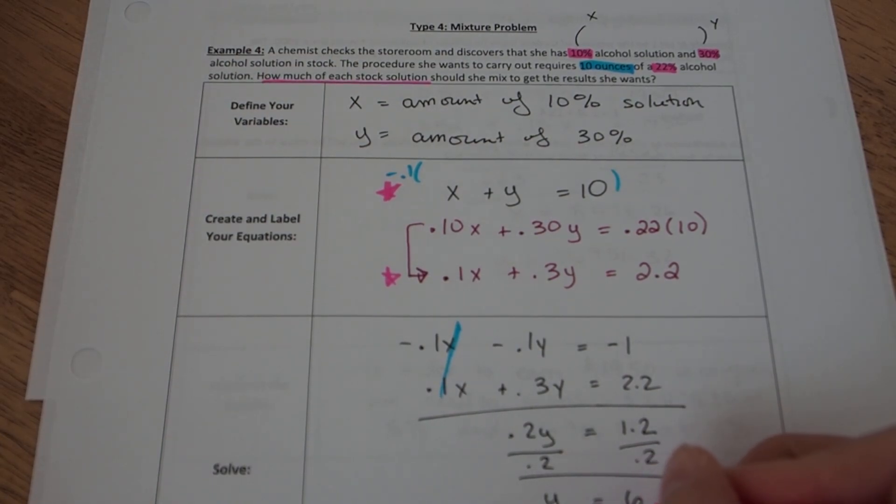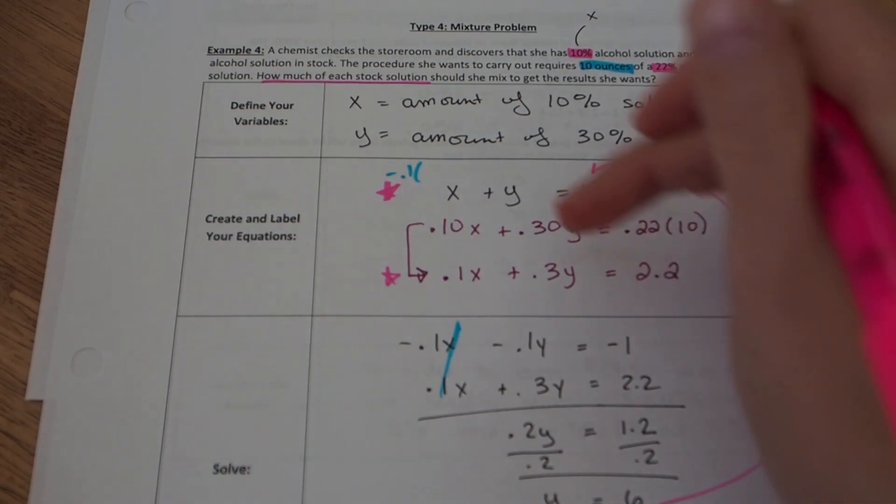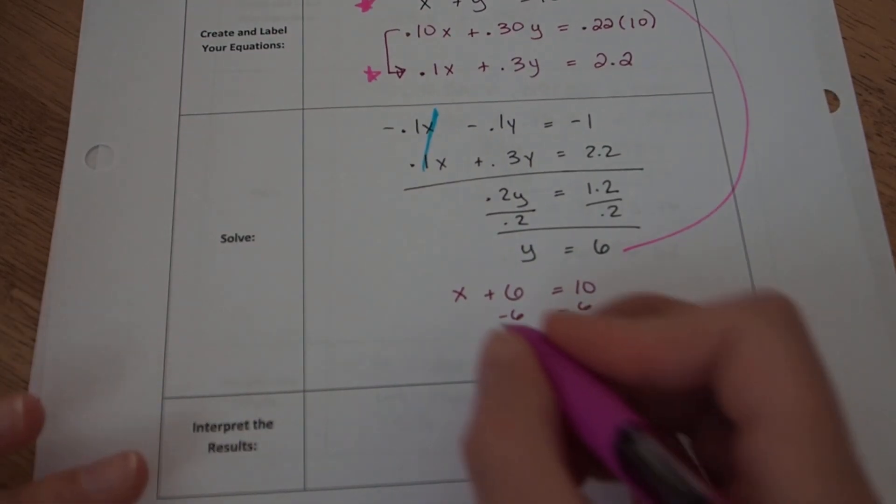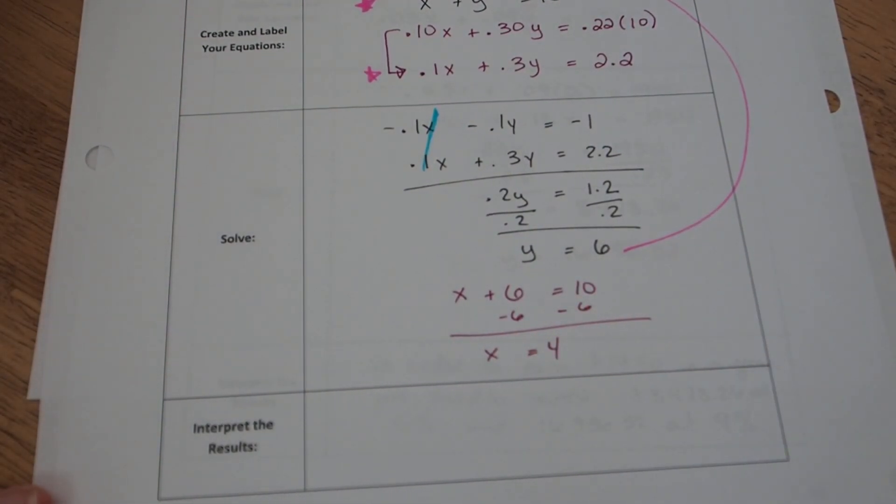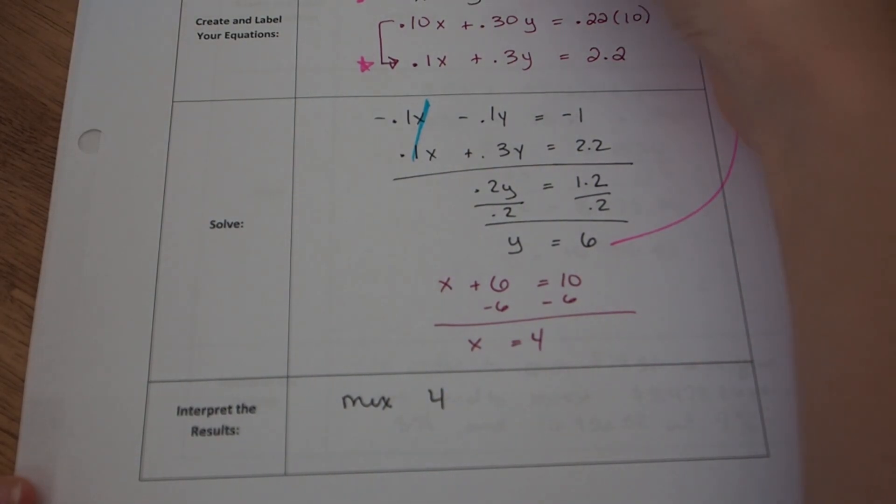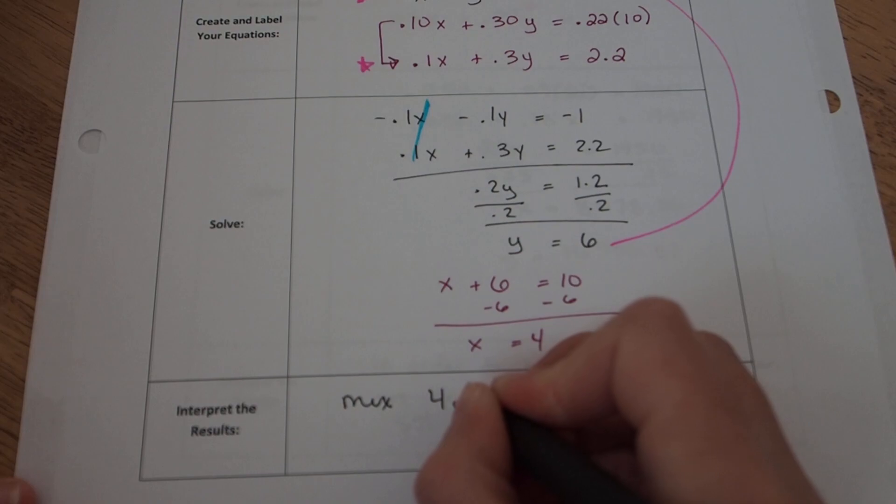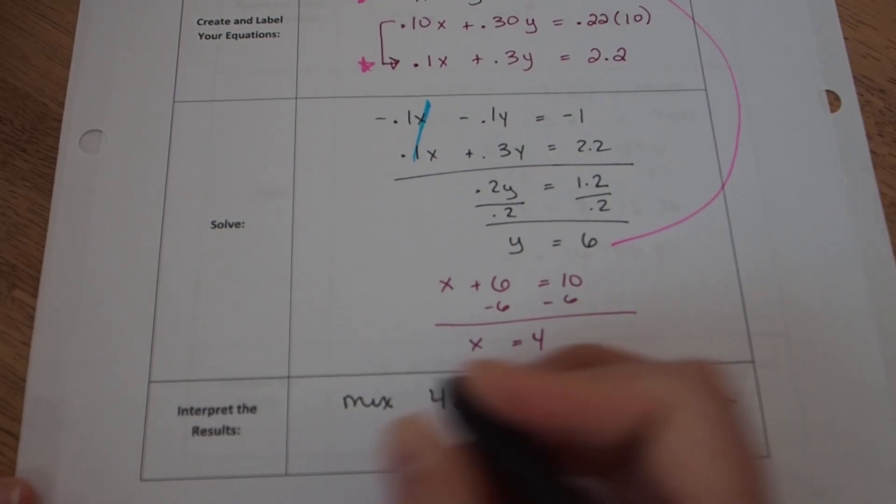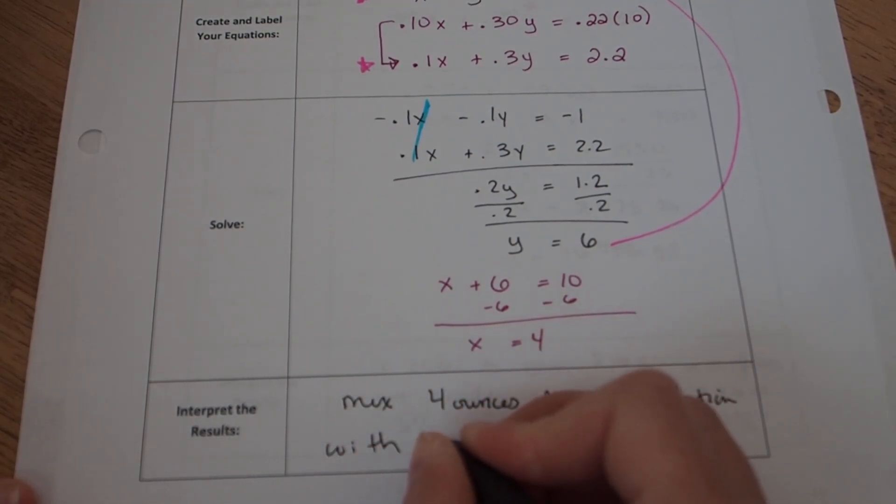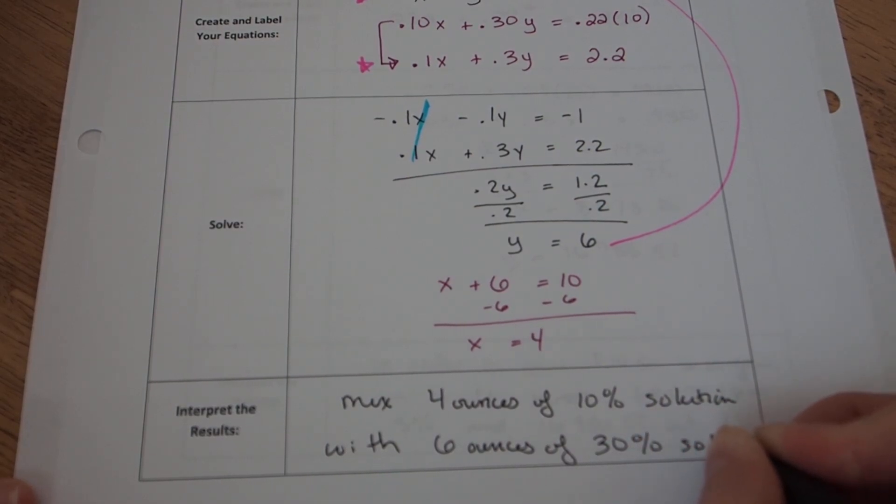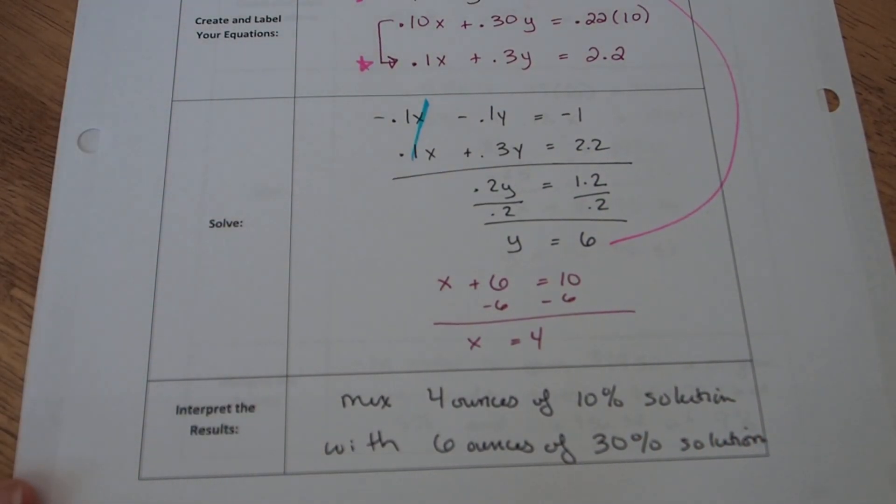And back into either of the equations to solve. And if you're going to choose between these two, the simpler one's the one on top, so you're going to plug into the top. So you've got x unknown plus 6 for y equals 10. Subtract 6. You're going to get the x needs to be 4. So she needs to mix 4 ounces of 10% solution with 6 ounces of 30% solution. And that is going to make exactly 10 ounces of 22% solution.